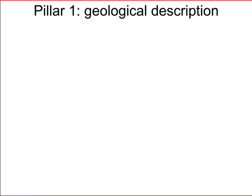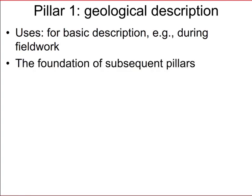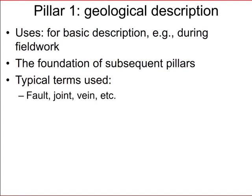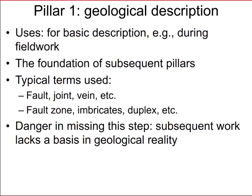In pillar one — basic geological description — the uses include: it's what you do during fieldwork, making notes of what structures are present, what ages and types of rocks are present. It is the foundation of subsequent pillars. Typical terms used include fault, joint, and vein for individual structures, or fault zones, imbricates, and duplexes for relationships between structures. The danger of missing this step is that the subsequent work lacks any basis in geological reality — if you just talk about fractures without saying what type they are, the work is flawed.